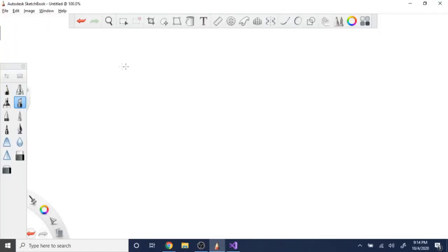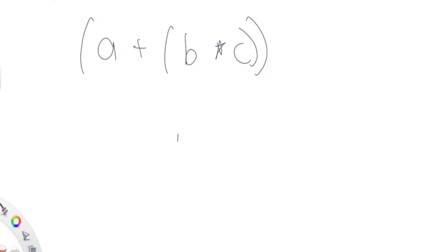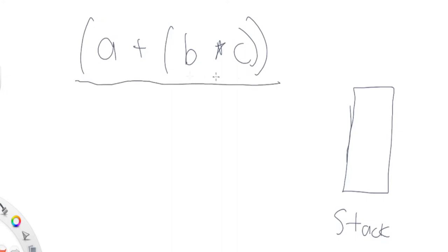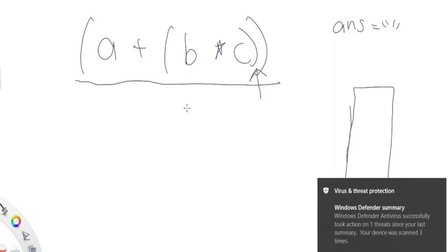The only thing you really need to know to do this problem is the stack data structure. I'm going to create a stack and loop through the whole input string. Every time I see an operand — plus, multiplication, minus, division, etc. — I push it onto the stack. When I see a closing bracket, I pop the top of the stack and add it to my answer string. For anything else, like letters, I just add it directly to my answer.